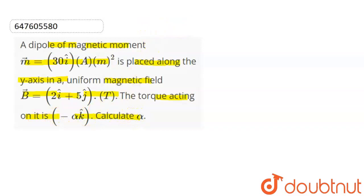So let me discuss here. We have a magnetic dipole moment. The magnetic dipole value M is 30i ampere meter square. The magnetic field is given as B equals 2i plus 5j Tesla. Now, what do we have to calculate?